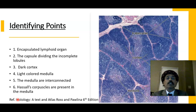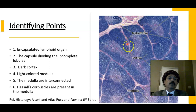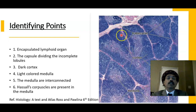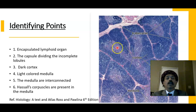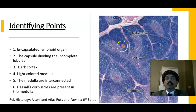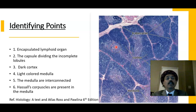It is encapsulated and from the capsule we get the trabeculae that divides the thymus into multiple incomplete lobules. Each lobule has a cortex and a medulla. In the medulla we get the thymic corpuscle, also called the Hassall's corpuscle. The cortex is dark and the medulla is light colored, and the number of corpuscles increases as age increases.